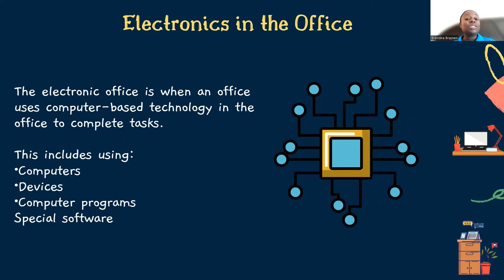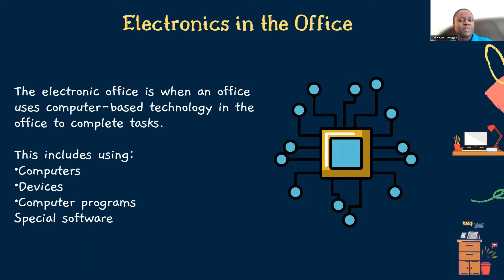Electronics in the office. The electronic office occurs when there's an office that uses computer-based technology to complete tasks. These electronic things usually include computers, devices, programs, and special software. Think about someone in a purchasing department walking through checking inventory and updating it from a handheld device — that saves time and avoids miscalculation. You can compare how much inventory is supposed to be on hand to what's actually on hand, and if you see there's 10 but you actually have 15, you can go into the records right away, identify where the difference came from, and update the records all at once. That brings efficiency and reduces wasted time in the office.